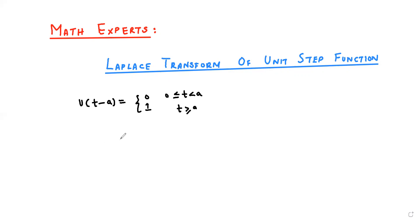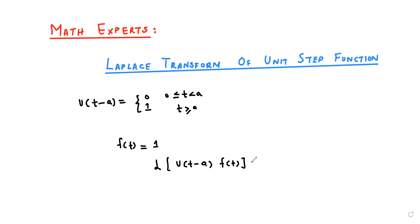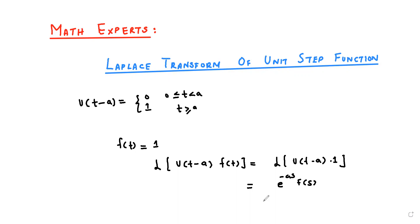We want to transform this function. Let f(t) = 1. We want to find the Laplace transform of the unit step function. Using the definition, the Laplace of u(t - a)·f(t) is equal to e raised to the power minus a times F(s). Since F(s) is the Laplace of 1, we have F(s) = 1/s.